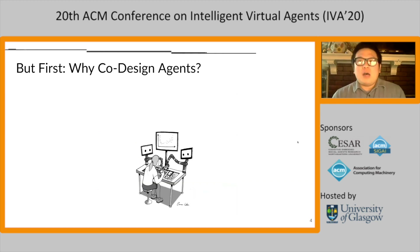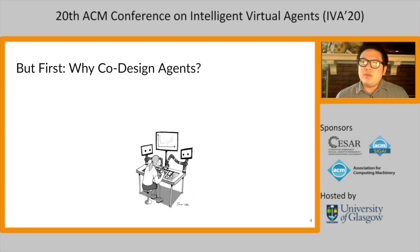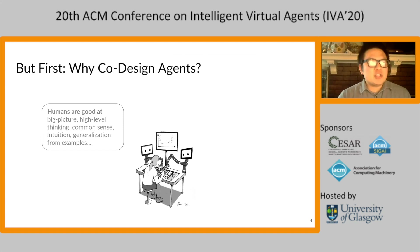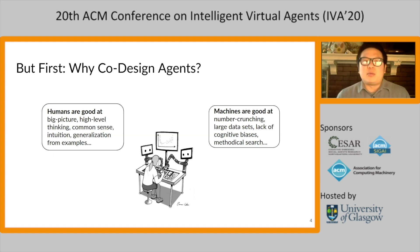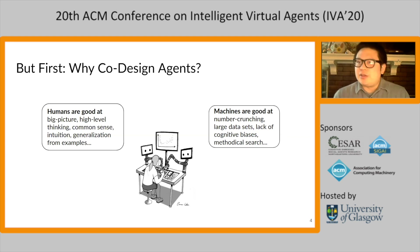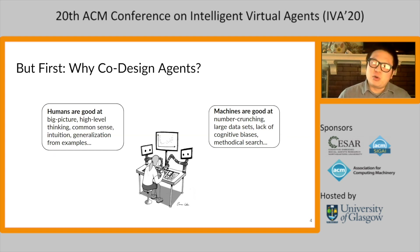Before diving in, I want to say a word on why we're so interested in this. We're driven by the belief that humans and virtual agents are really well suited to design things together. Humans are good at big-picture, high-level thinking — abductive reasoning using common sense, intuition, and generalization across examples — which is useful for ill-structured problems. Machines, on the other hand, are good at large-scale number crunching, working with large data sets without cognitive biases, and doing methodical search to generate new designs. There's a lot of interest in combining the best of both worlds for unstructured tasks like designing, and it's in studying these interactions that we've become really interested in design intentions.